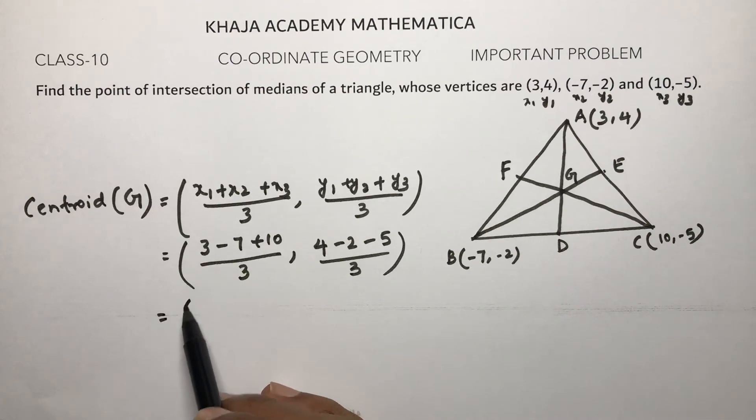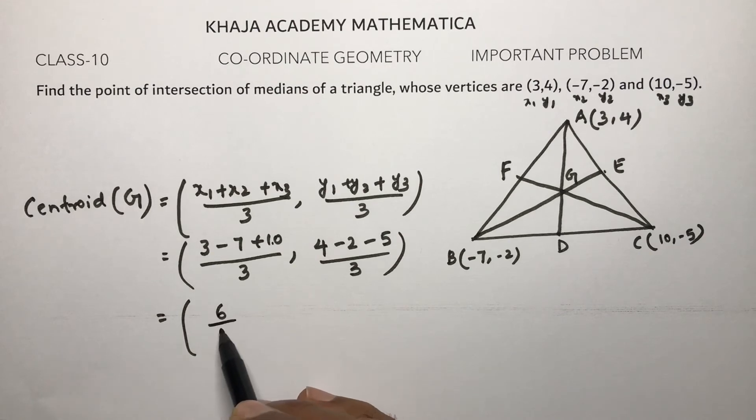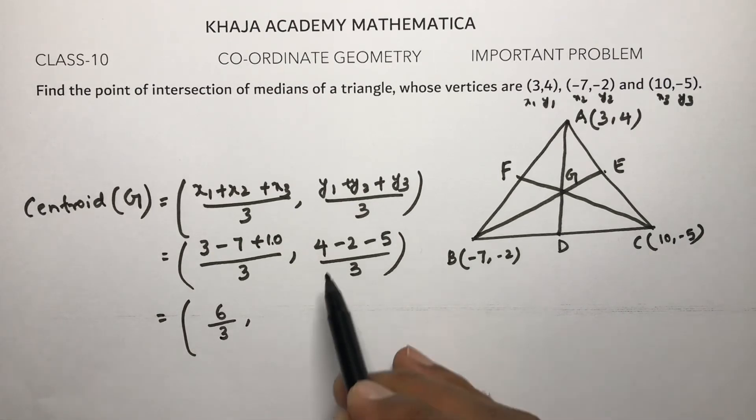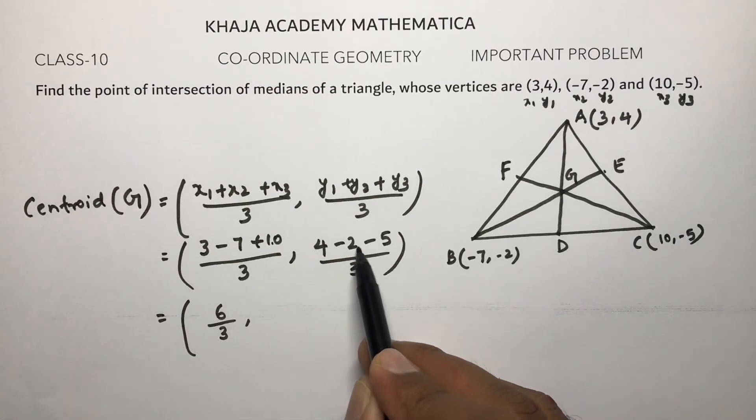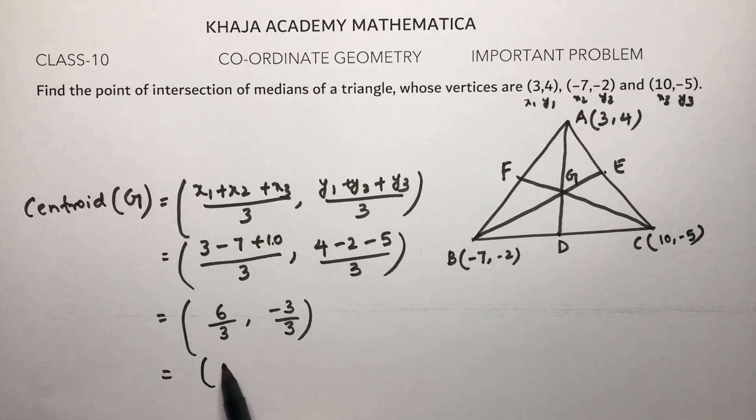By 3. 4 minus 2 is 2, 2 minus 5 is -3, by 3. So 6 by 3 is 2, -3 by 3 is -1.